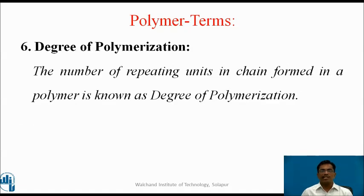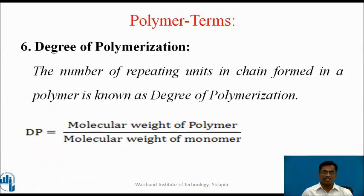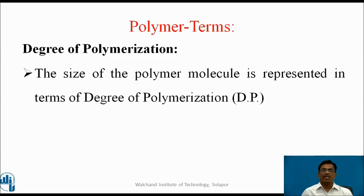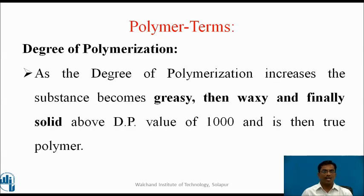Sixth term: degree of polymerization. The number of repeating units in a chain formed in a polymer is known as degree of polymerization. Mathematically, dp = molecular weight of polymer / molecular weight of monomer. As the degree of polymerization increases, the substance becomes greasy, then waxy, and finally solid above a dp value of 1000, and is then a true polymer.